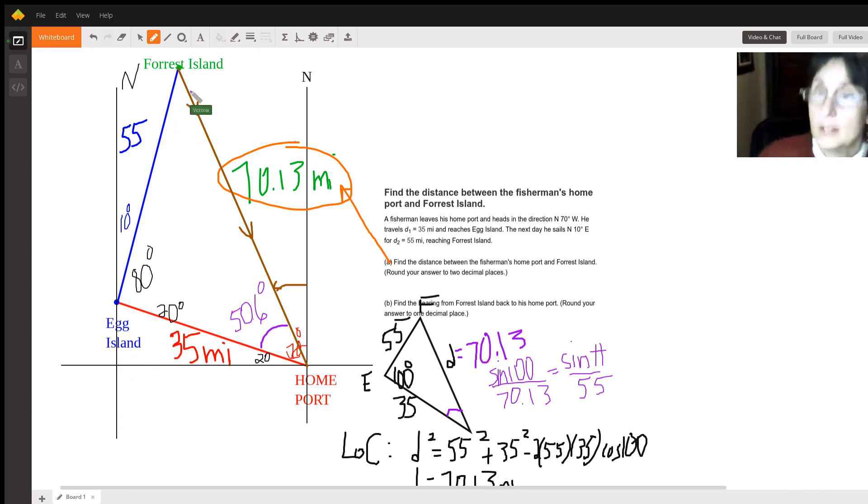Now knowing that, I can do 90 minus 20 minus 50.6 and find out that this is 19.4 degrees.